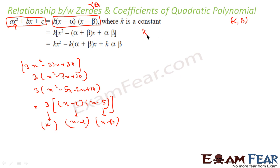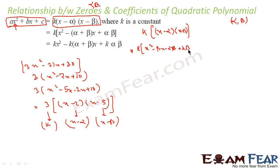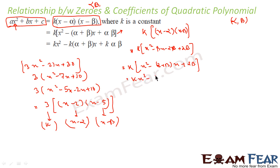If you expand k(x − α)(x − β), you get k(x² − βx − αx + αβ), which is k(x² − (α + β)x + αβ). Distributing k, this becomes kx² − k(α + β)x + k·αβ.